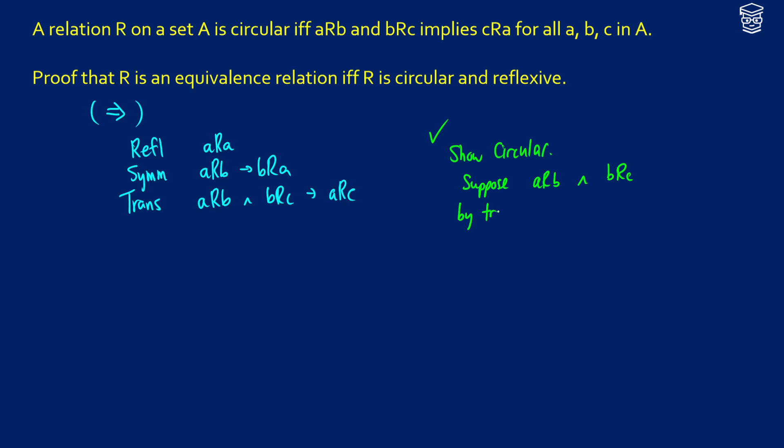So by transitivity, we know that we are going to get aRc. And then by symmetry, we can then claim that we're going to have cRa. Therefore, if we have aRb and we have bRc, we are going to be able to get cRa.